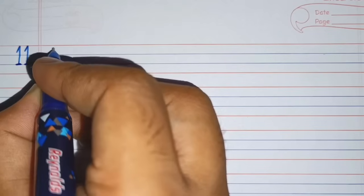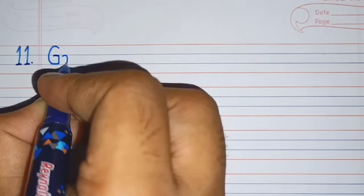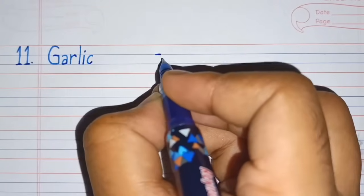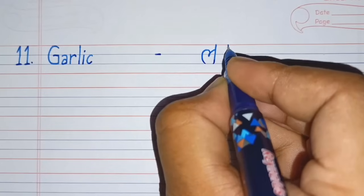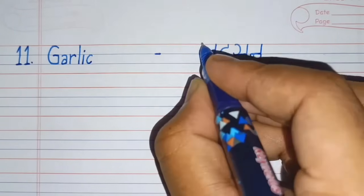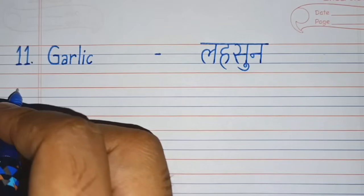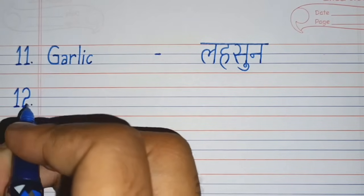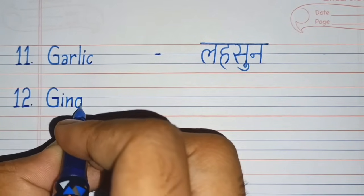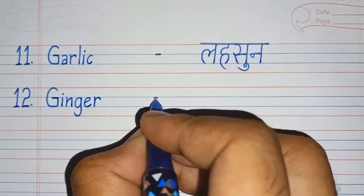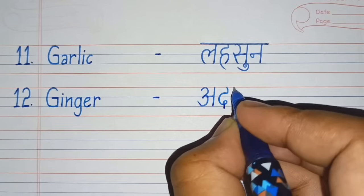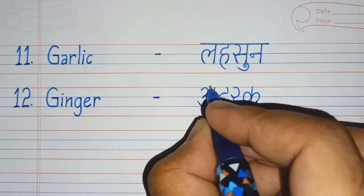Eleventh number. G-A-R-L-I-C, Garlic. Garlic means Lehsun. Twelfth number. G-I-N-G-E-R, Ginger. Ginger means Adrak.